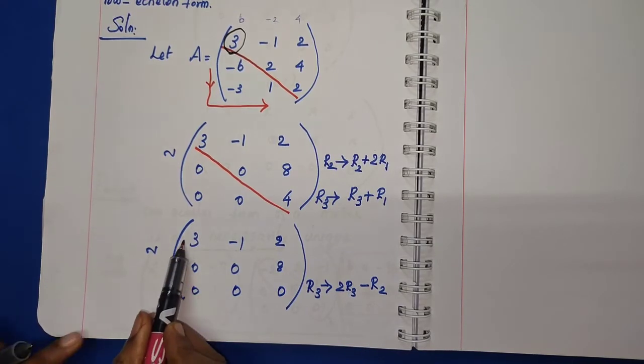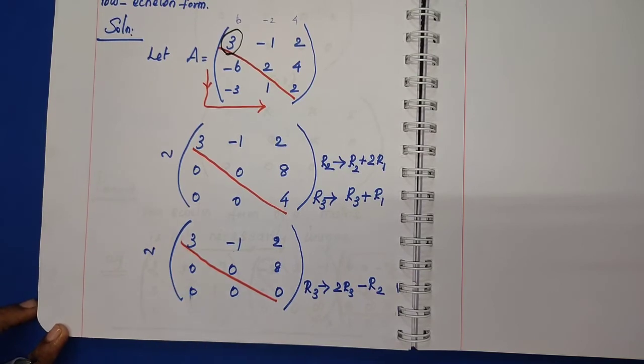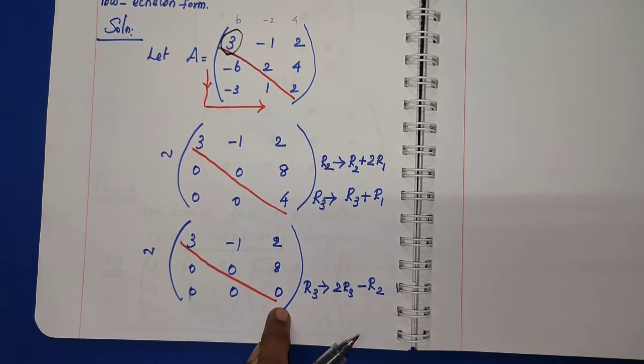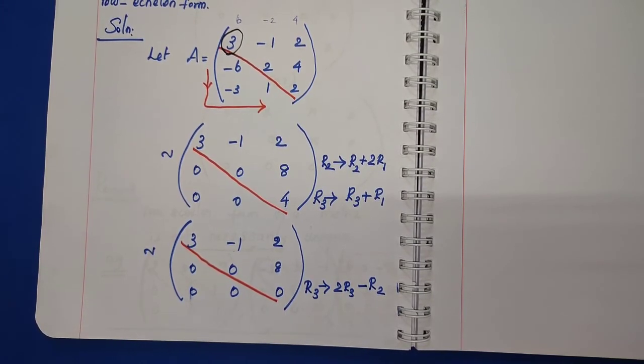Now look, this is the main diagonal. All entries below the main diagonal is 0. One more checking: last line, there are three zeros. Here, two zeros only. This is the final stage. Now, this is the row echelon form.